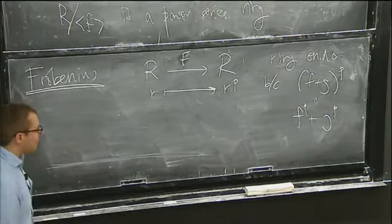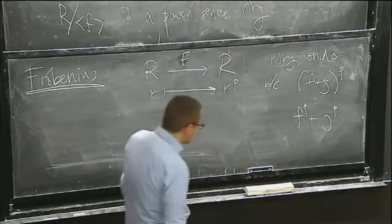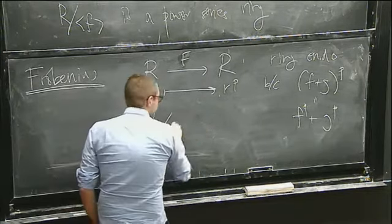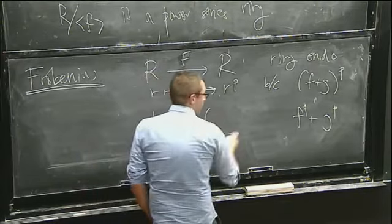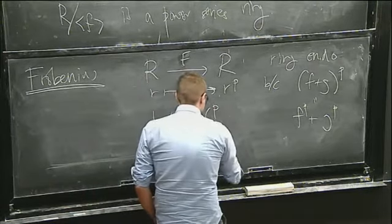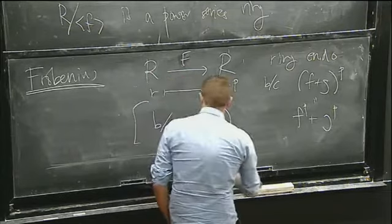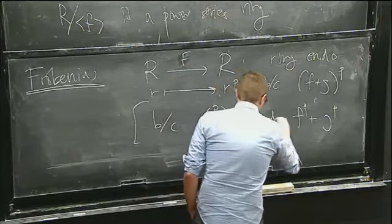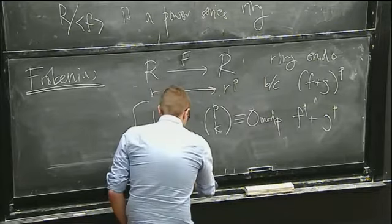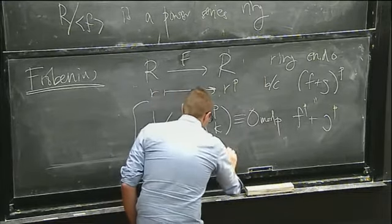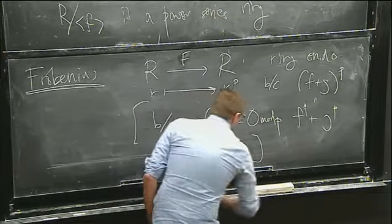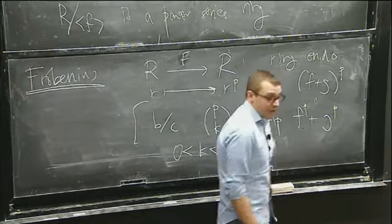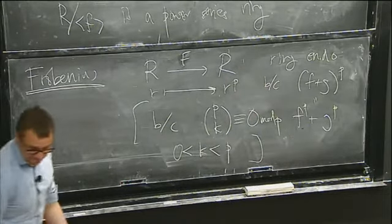So (f+g)^p = f^p + g^p. The reason is that if I look at the binomial coefficients, these are all 0 mod p when k is between 0 and p. So if I just expand using the binomial theorem, the only terms that survive are the two ends.